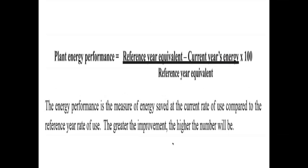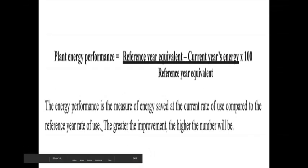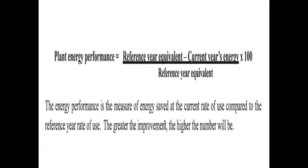If the plant energy performance value is greater, it indicates improvement and energy conservation — a positive value is acceptable. A negative value means the energy situation has worsened and needs to be addressed.